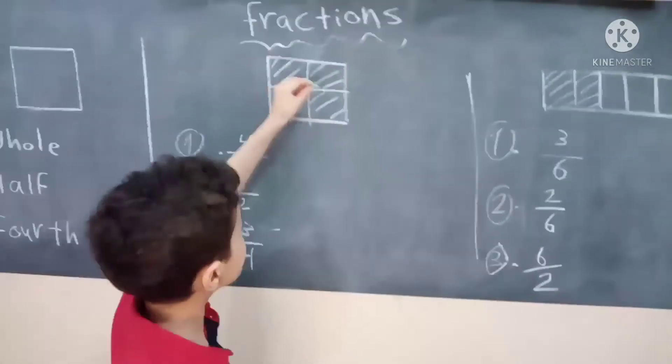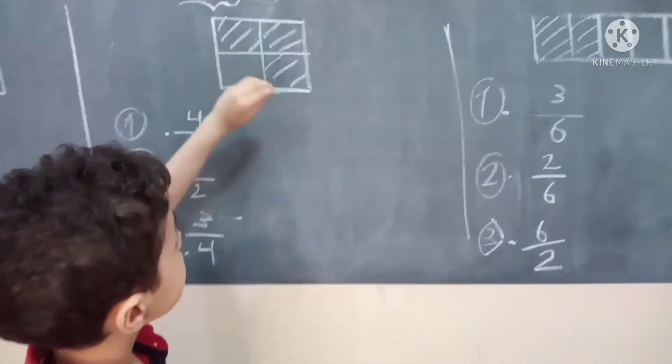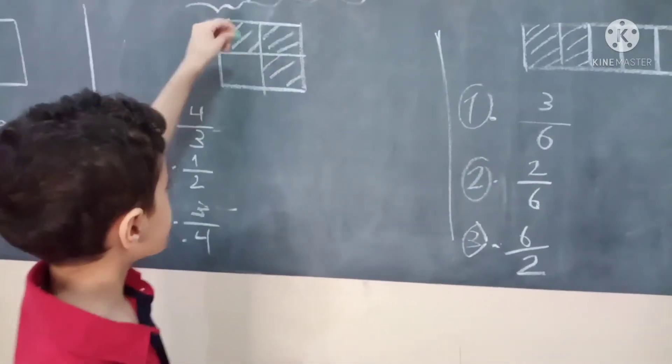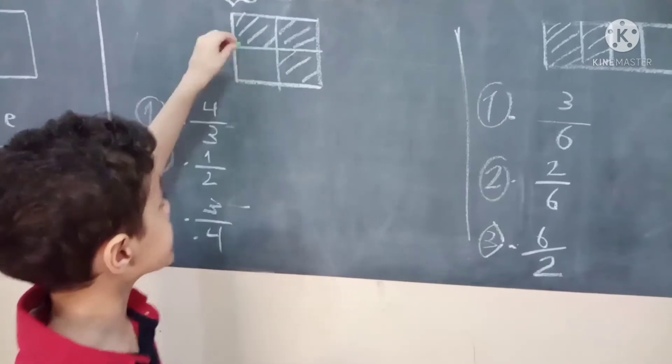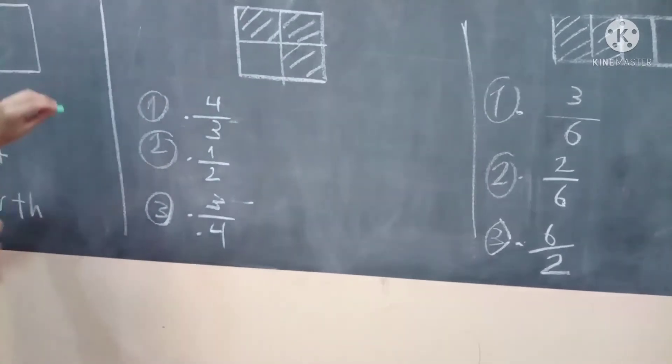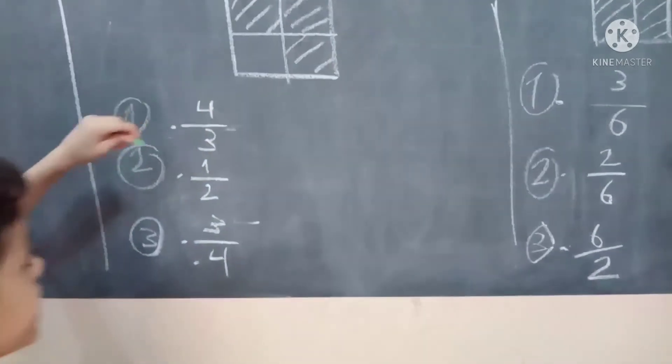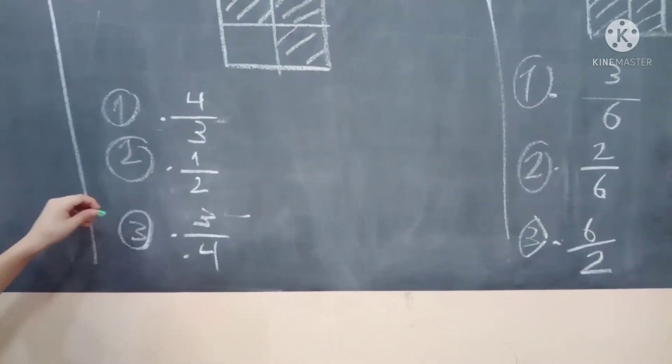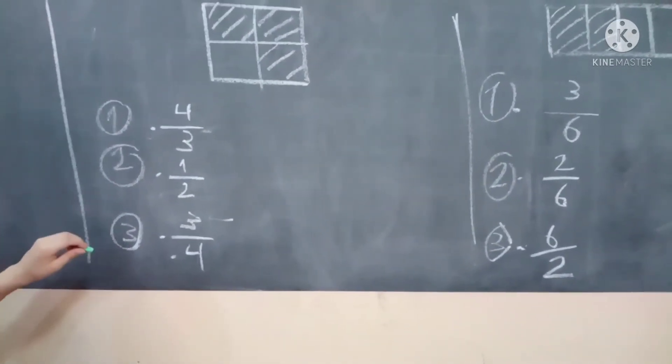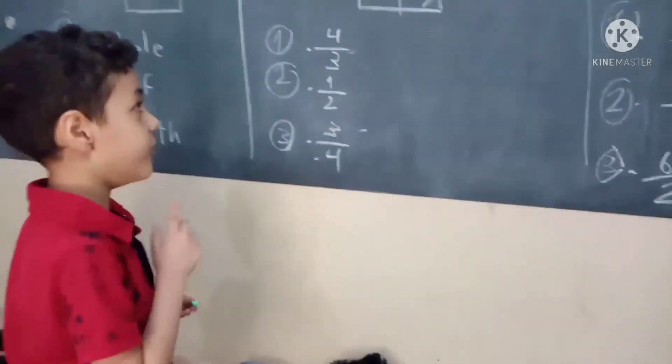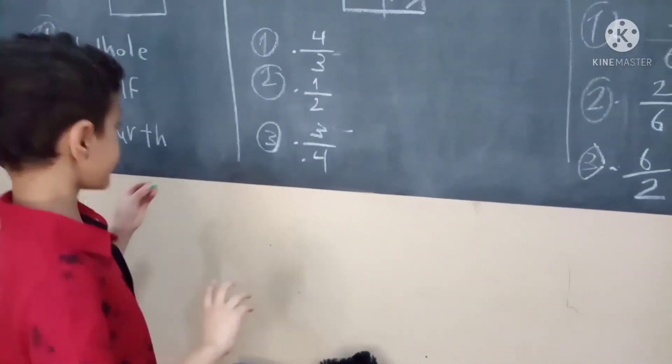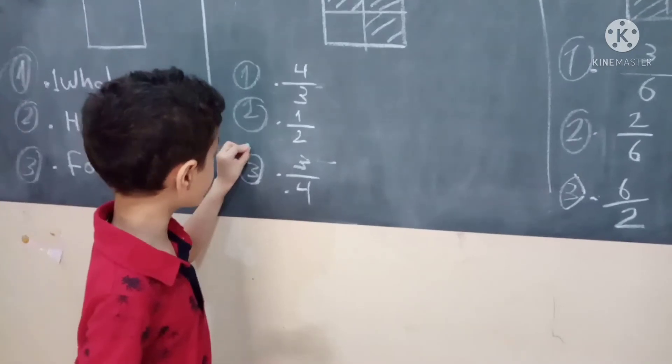Next one. This one is three colored in all is four. So is it four over three or one over two or three over four? Hmm. You got it right. It is three over four.